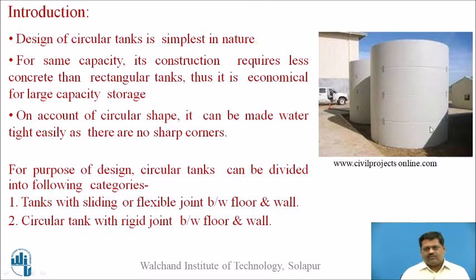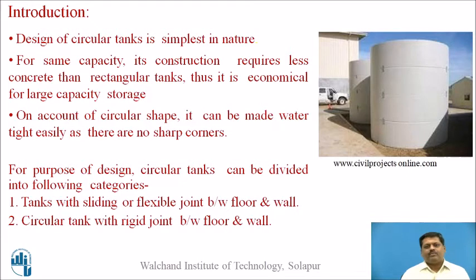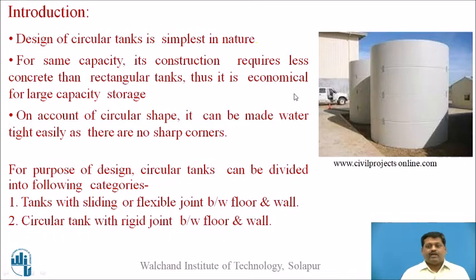You can see here the circular type of water tank in this photograph, which is resting on ground. Component-wise, there is one circular wall resting from the base. The base slab is completely resting on the ground, and the circular wall is supporting the roof slab. So there are three elements, but the most important element in the circular type of water tank is the circular wall. Casting of the circular wall is also a difficult task.